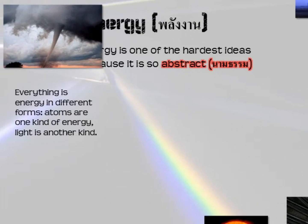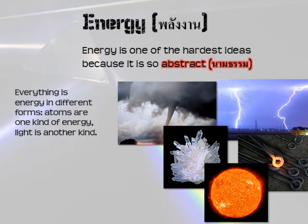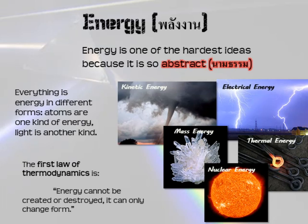Energy is a very hard idea to explain because it is so abstract. Everything is energy in different forms — atoms are one kind of energy, and light is another kind of energy. In fact, the first law of thermodynamics is: energy cannot be created or destroyed; it can only change form. Here are some of the different forms of energy. There is kinetic energy, which is movement, and electrical energy, which is charge — when you have a lot of charge in one place, you have electrical energy built up.